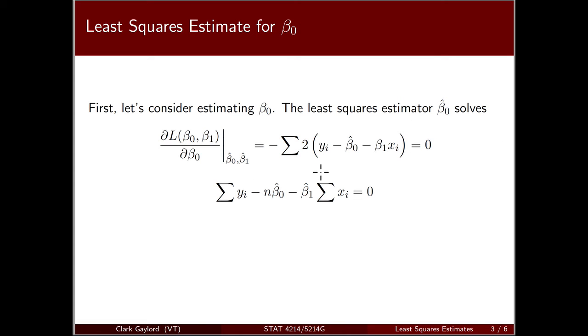That sum going through, the sum of the yi's, the sum of the xi's, and n times beta0. If we move our n beta0 term to the other side and divide by n, we get our estimate. The sum of the yi's divided by n is y bar, and the sum of our xi's divided by n is x bar.